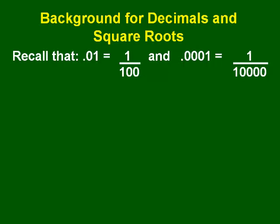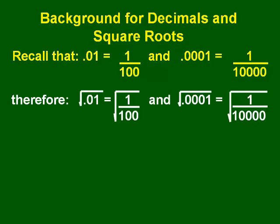Decimal 0.01 is equal to 1 over 100, and decimal 0.0001 is equal to 1 over 10,000. This means the square root of 0.01 would be the same as the square root of 1 over 100, and the square root of 0.0001 would be the same as the square root of 1 over 10,000.